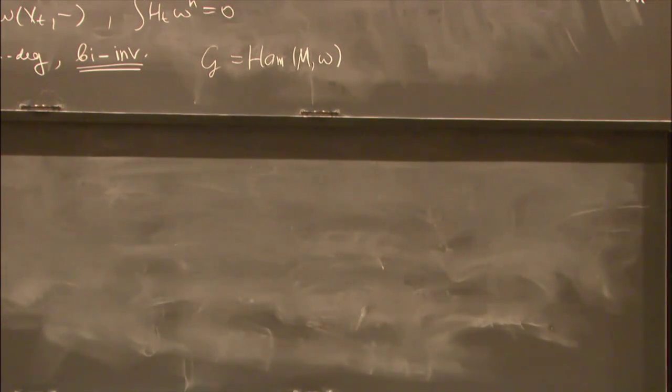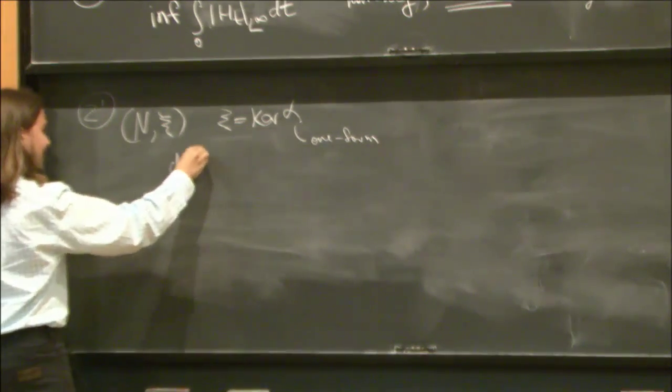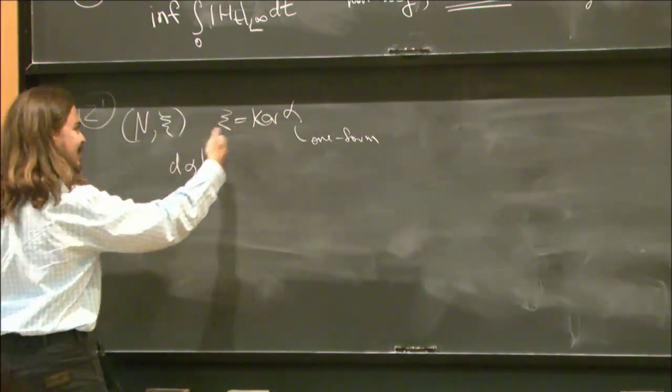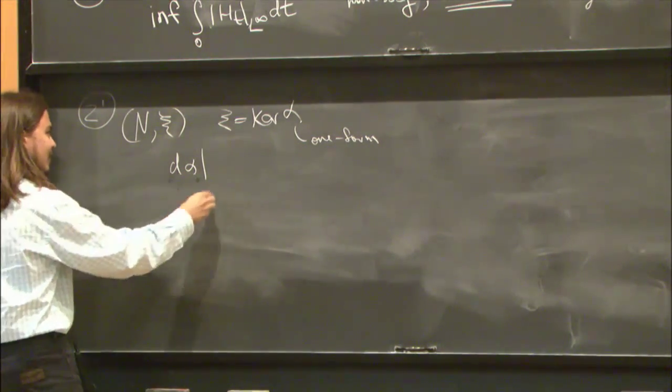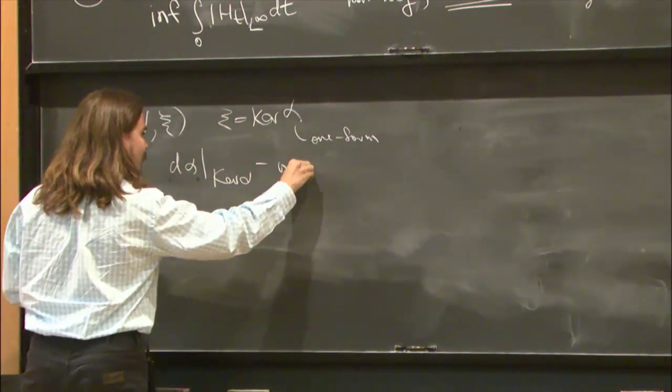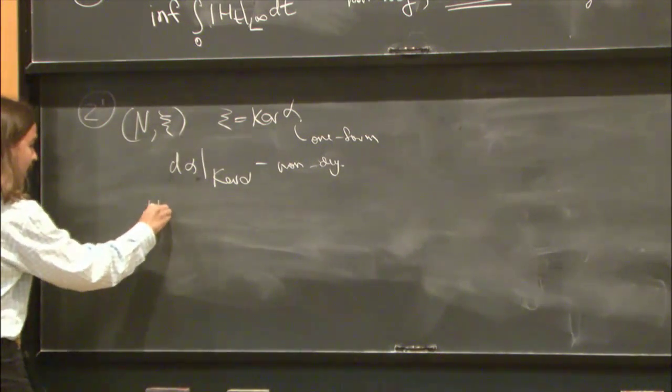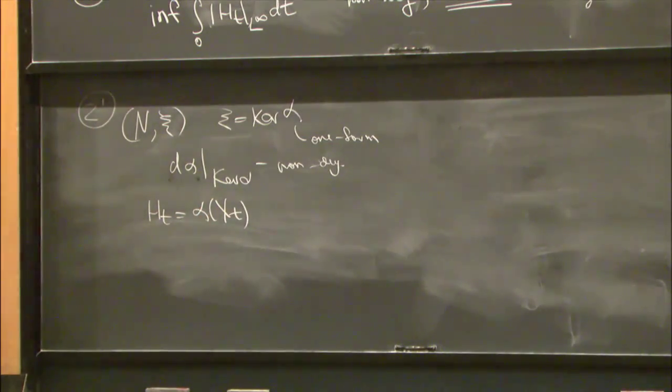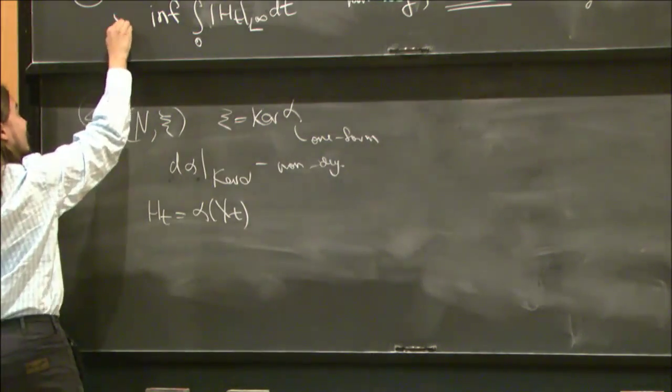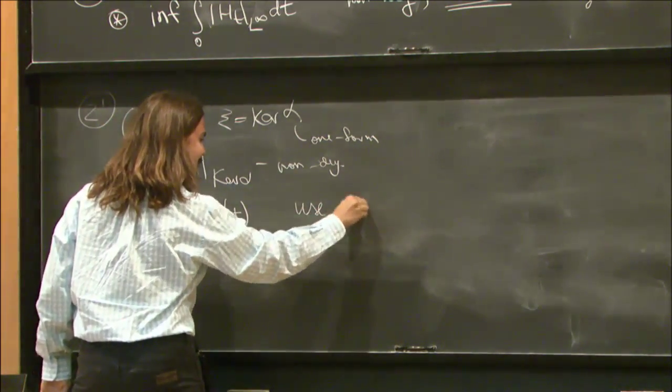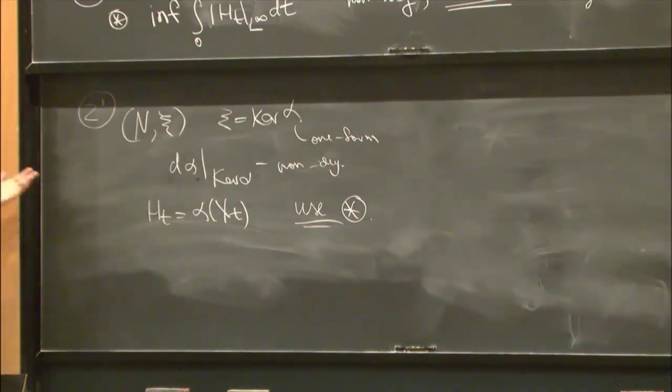Two prime is the contact case. Take a contact manifold, so xi is the kernel of one form alpha. As Joe explained yesterday, this is equivalent to saying that the differential of alpha restricted to the kernel of alpha is a non-degenerate form. In this case, one can play a very similar game. One can put h_t to be alpha of x_t, where x_t is the tangent vector field. And then, once again, one can use the same formula. In fact, this also gives a non-degenerate metric.